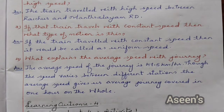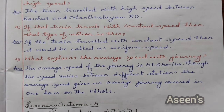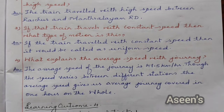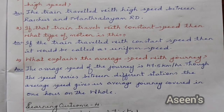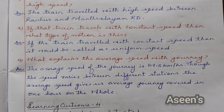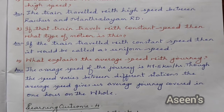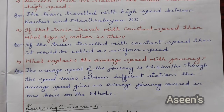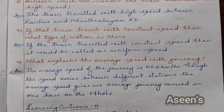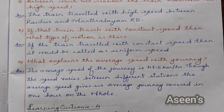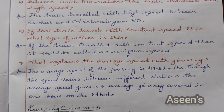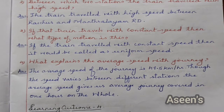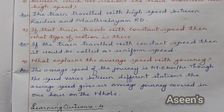What explains the average speed of the journey? The average speed of the journey is 47.5 kilometer per hour. Though the speed varies between different stations, the average speed gives us the average distance covered in one hour on the whole.